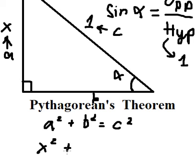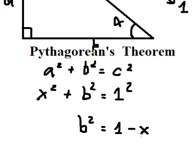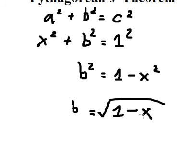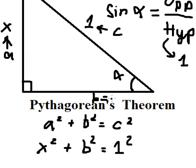We want to find the value of b, so a equals x, c equals to number one. So we put x squared plus b squared equals one squared. Take the square root of both sides and we know that b equals the square root of one minus x squared.